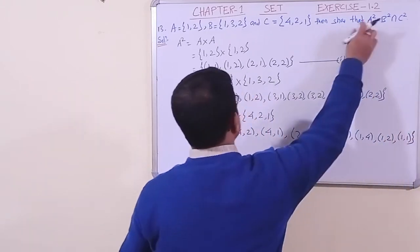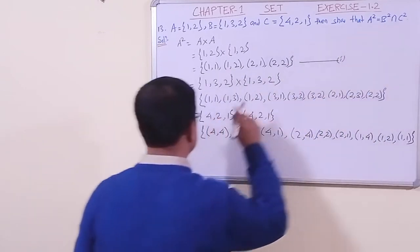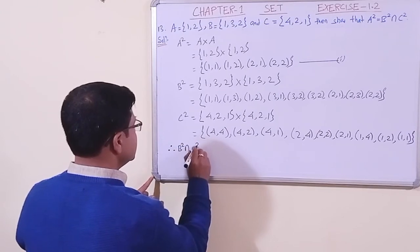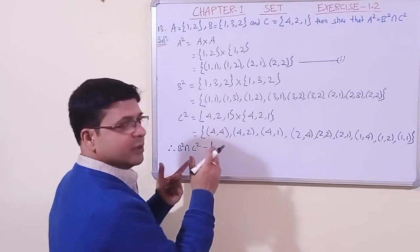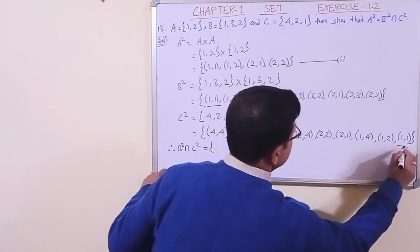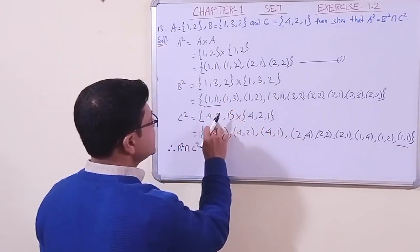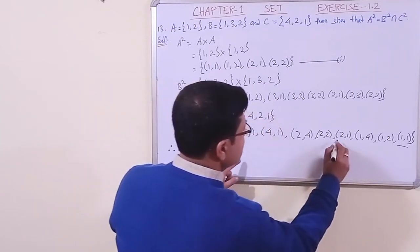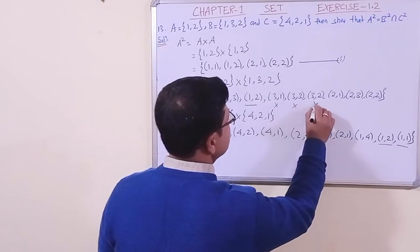Now A square we have found. What is left in the right hand side? B square intersection C square we have to find. Therefore, B square intersection C square, let us find out. Now here, what are common? Intersection, you know the meaning, we have to find the common thing. (1,1) is there, yes, let us mark. At first (1,1). (1,3) will not find anything because 3 is not there. (1,2) will find, we have found this (1,2). (3,1), 3 is not there.